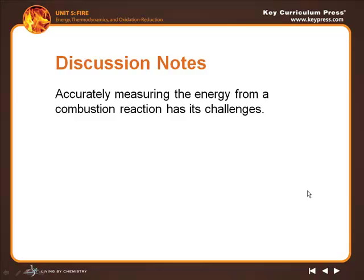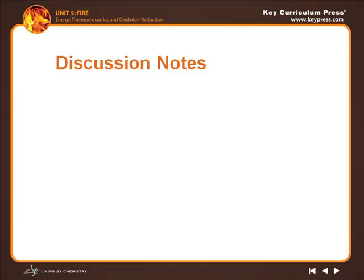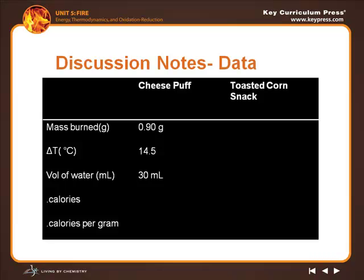Accurately measuring the energy change from a combustion reaction has its challenges. When you measured the cheese puff, you may have gotten data like this - not exactly the same, but like this. For example, this person measured a cheese puff and 0.90 grams of the puff burned. The temperature change of the water went up 14.5 degrees Celsius, and the volume of the water was 30 milliliters.